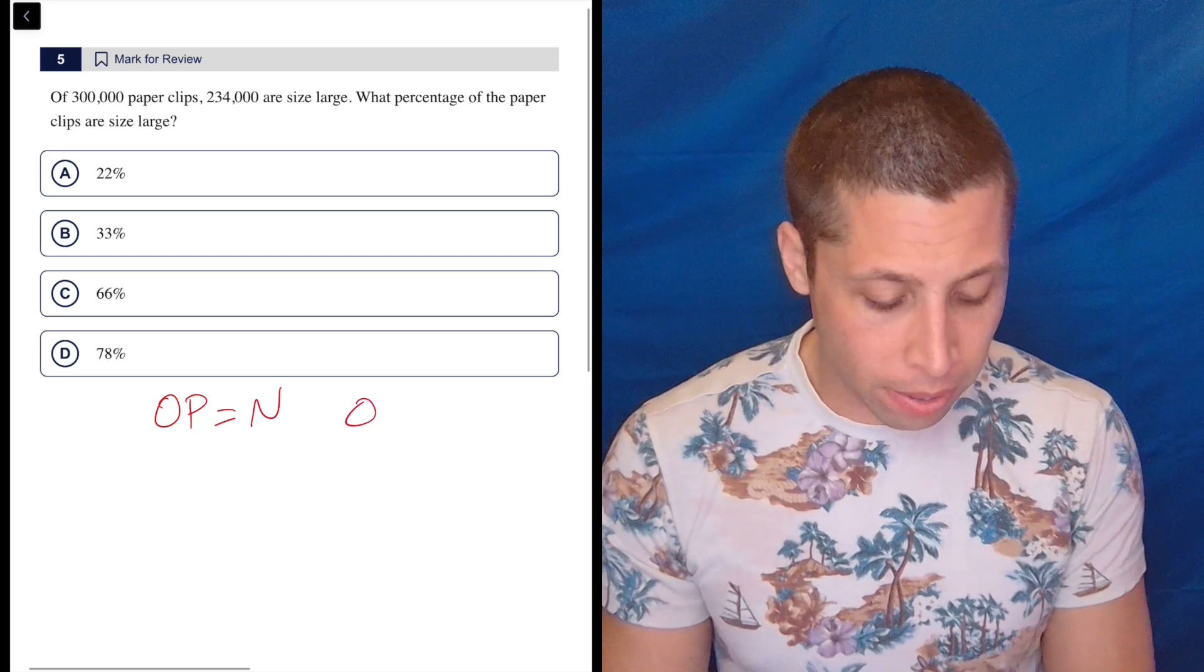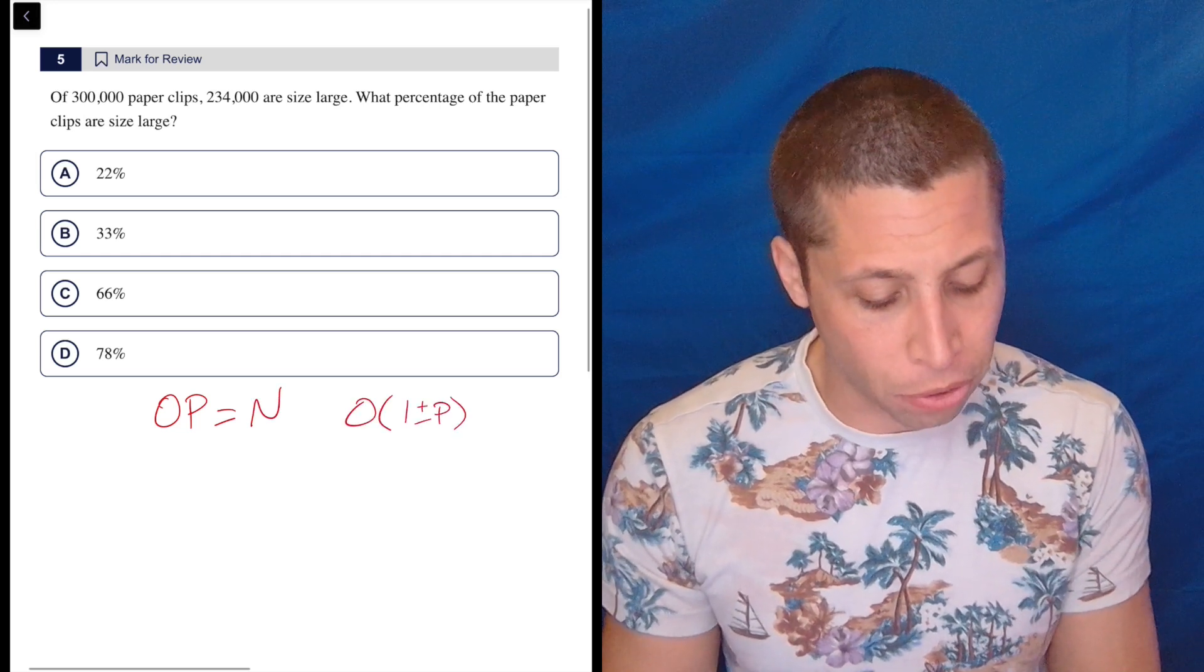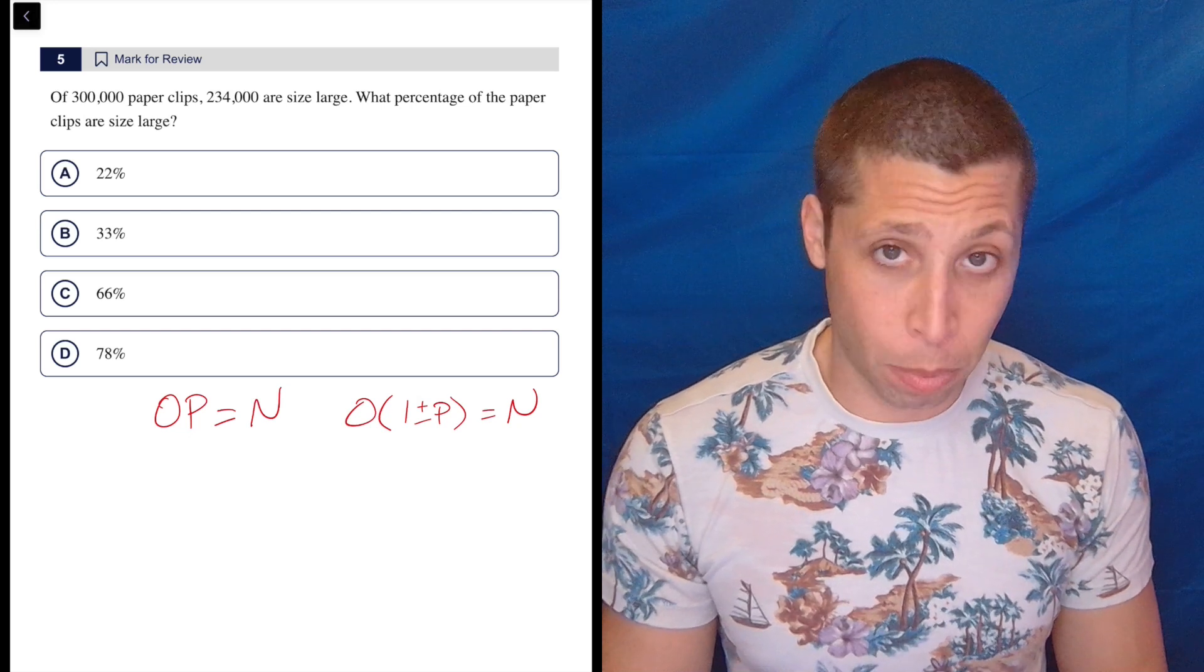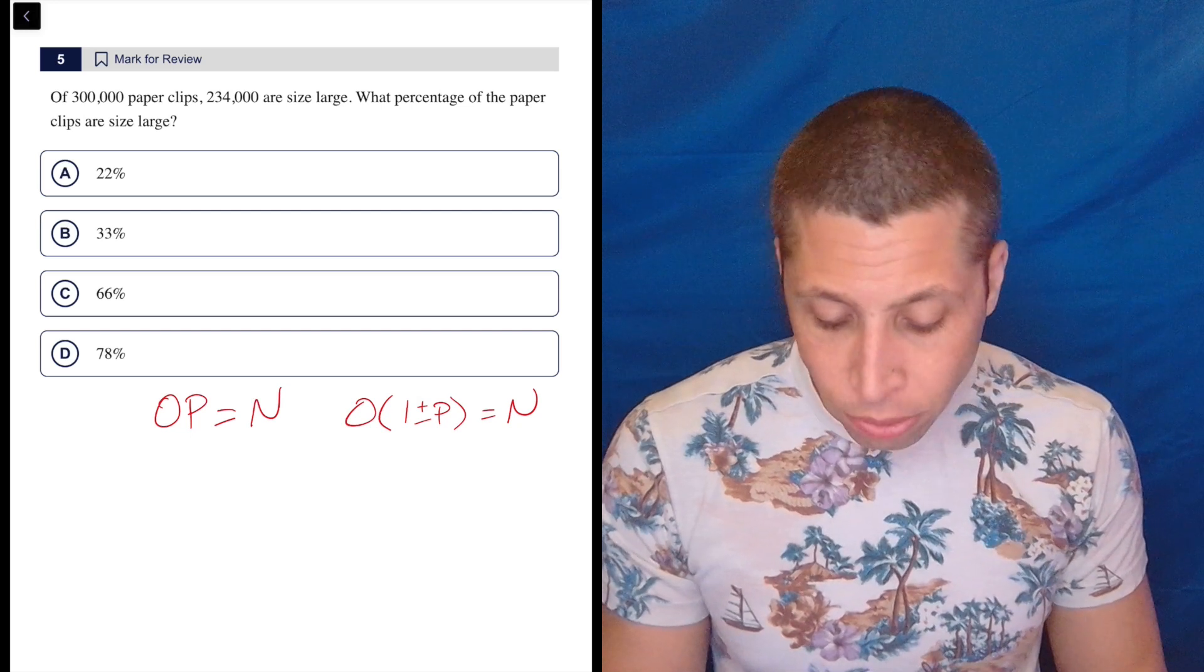One just looks like the word open. The other has a little one plus or minus piece there. Now the one plus or minus is when we have a percent change, a percent increase, percent decrease. I don't see that here.